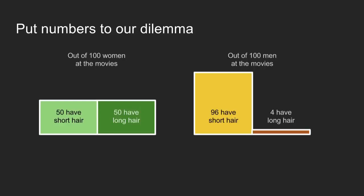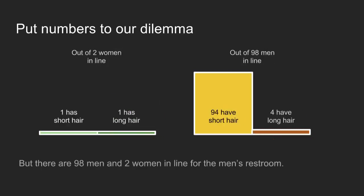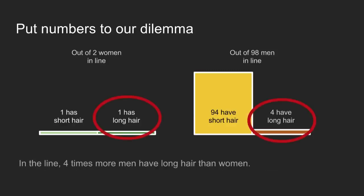To put numbers to this dilemma: out of 100 women at the movies, 50 have short hair and 50 have long. Out of 100 men at the movies, 96 have short hair and 4 have long. In this case, there are definitely more women with long hair than men with long hair, so it's a safe bet to assume this person is a woman. Now, in the men's restroom line, let's say there are two women out of every 100 people and 98 men. There's still one with short hair and one with long hair — half and half. But now there are four times as many men with long hair than women with long hair in this group. Now the safe money is to bet that this person is a man.